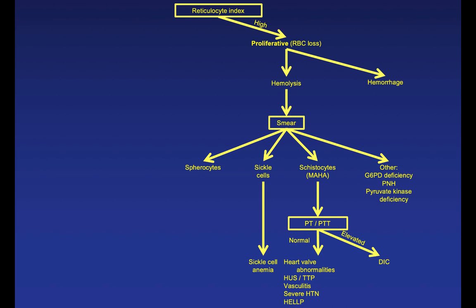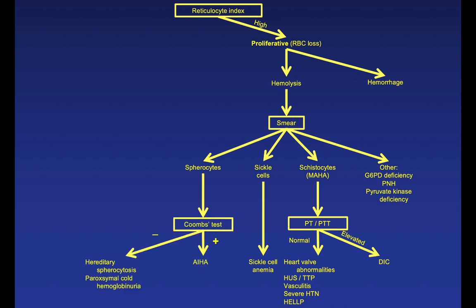If you see spherocytes on the smear, the next step is a Coombs test. If the Coombs is positive, the diagnosis is autoimmune hemolytic anemia. If it's negative, you consider hereditary spherocytosis or paroxysmal cold hemoglobinuria. Usually when I think a patient is hemolyzing, I get a hematologist involved to help with the diagnosis.